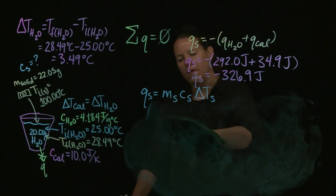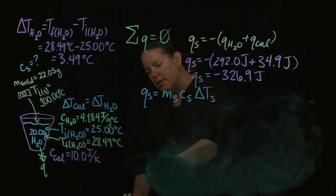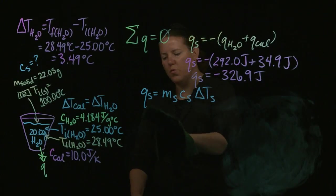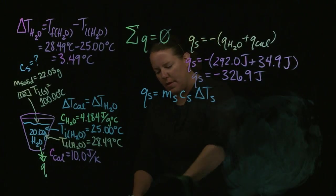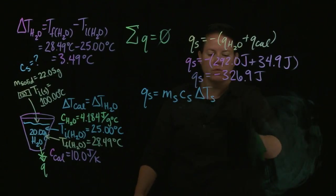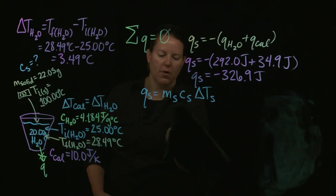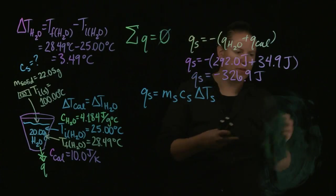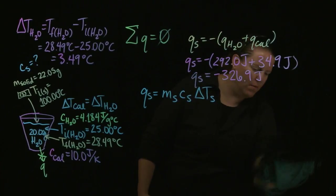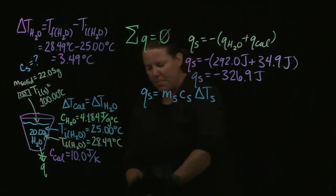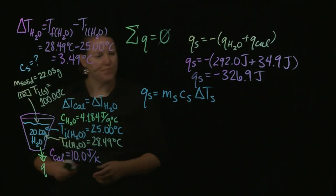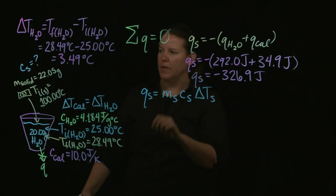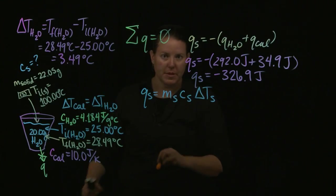You would have an ability to identify the unknown solid if you had a list of specific heat capacities of unknown solids. If we knew what the specific heat capacity ends up being, we could go to known specific heat capacities, compare, and identify. Some metals have very similar specific heat capacities, so you would probably have to be given a list of those used in the experiment.